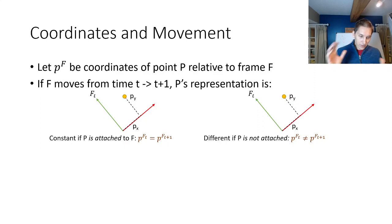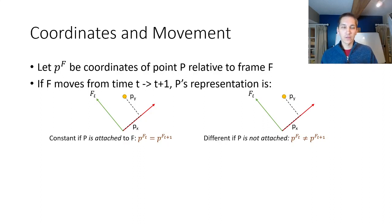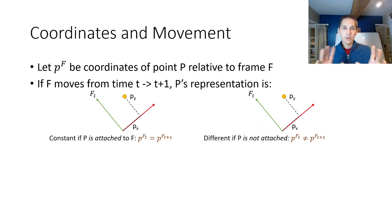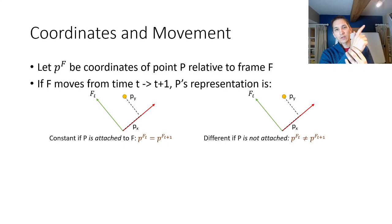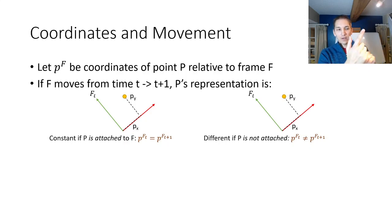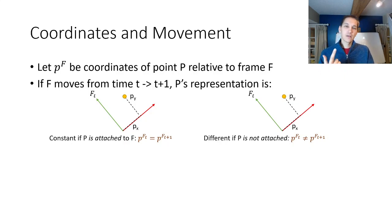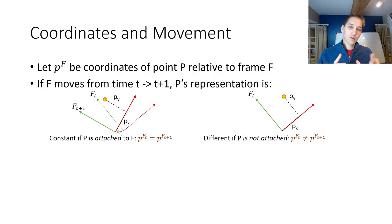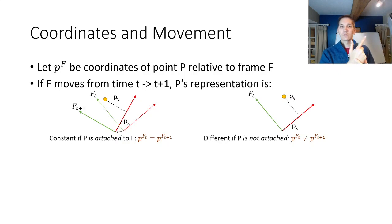Coordinates can also move over time, and we need to be careful about how we understand movement. If a point is attached to a frame — say my finger relative to my palm — and I move my palm, my finger moves along with it. The coordinates of my finger relative to my palm stay the same, even though the point is actually changing position in space. So the finger is moving as my hand moves, but its coordinates relative to the palm are constant.